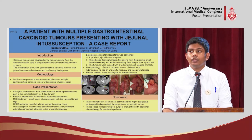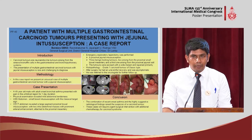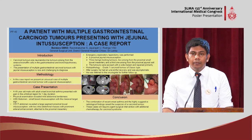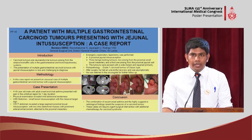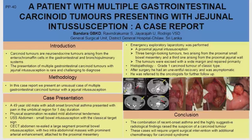This patient is a 49-year-old male with a history of recent onset bronchial asthma, who presented to us with pain in the umbilical region for one day's duration. On physical examination, there was only mild abdominal tenderness. Initial hematological and biochemical investigations were normal.